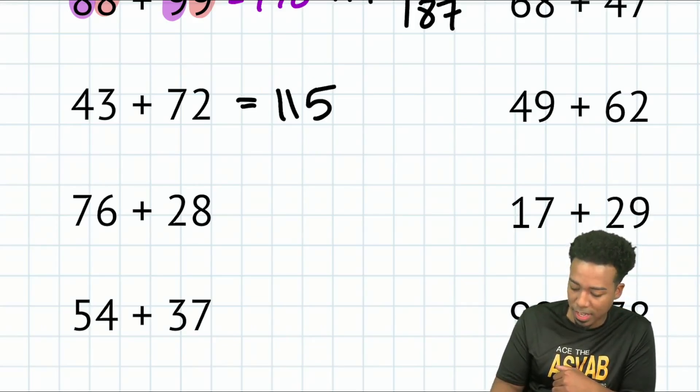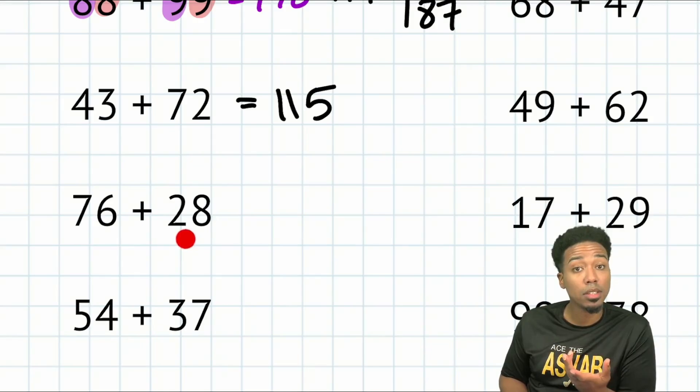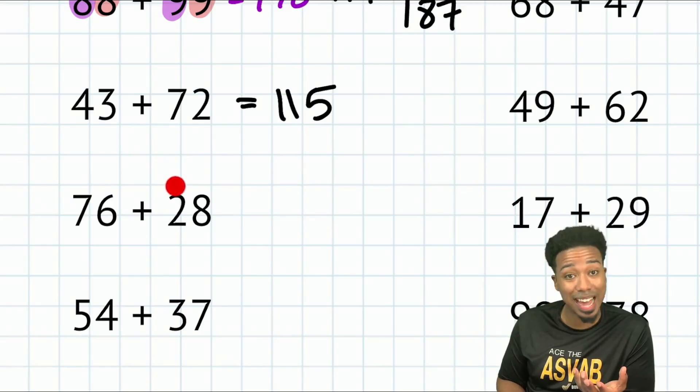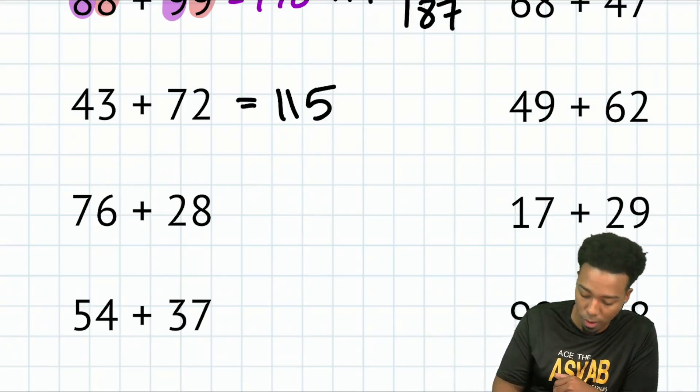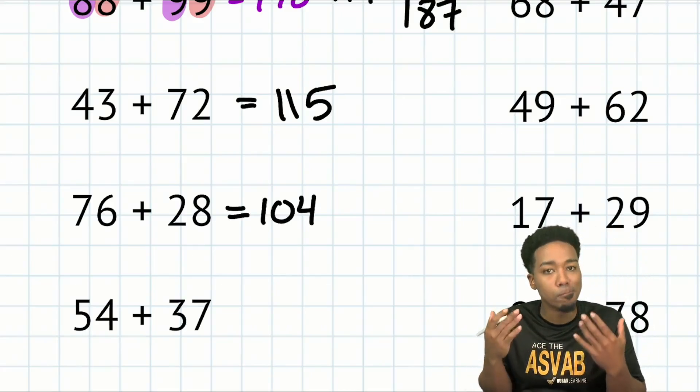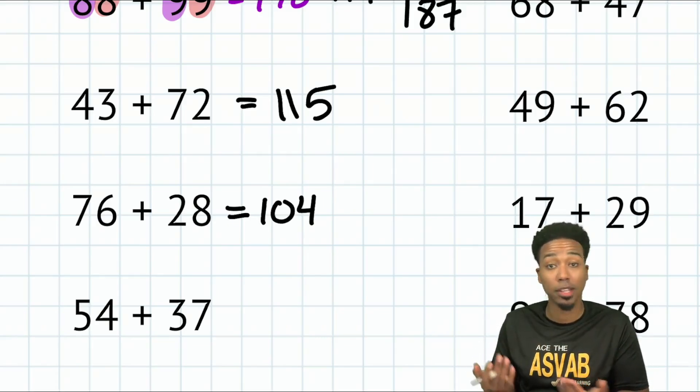Next up, we have 76 plus 28. Again, split and glue if you want to. 70 plus 20 is 90. 6 plus 8, 14. So we have 90 plus 14, that's 104.